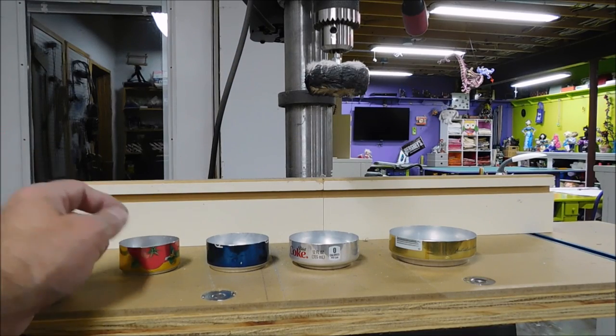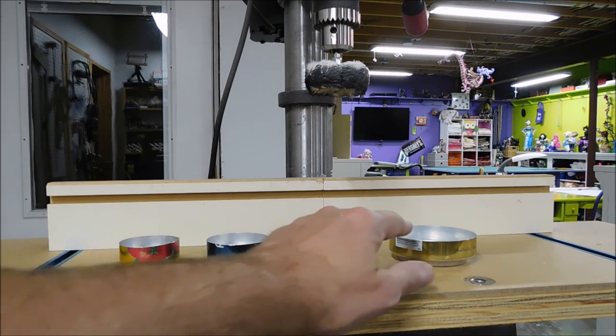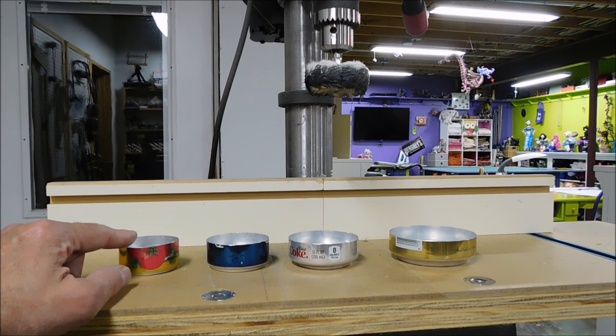These are the beverage cans I use for alcohol stoves. Juice can, seven and a half ounce mini, 12 ounce beverage can, the Foster's beer can. I cut all these bases to exactly one inch tall.